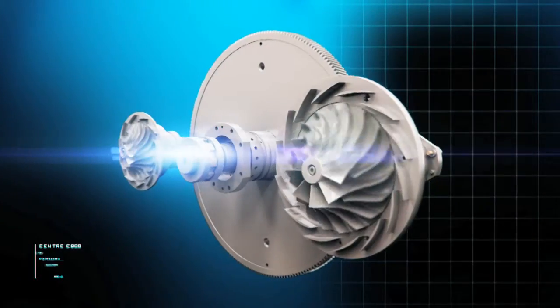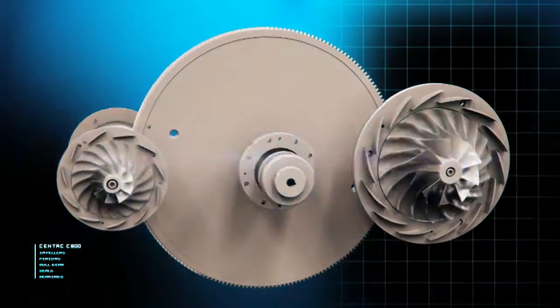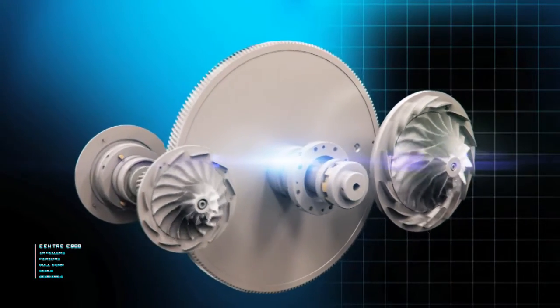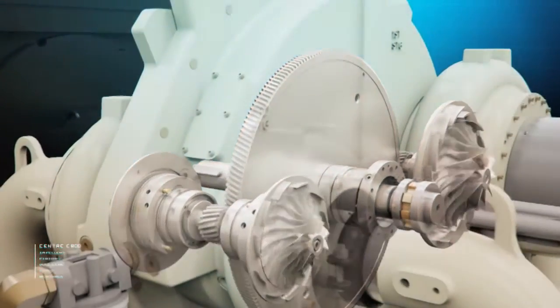At the heart of each C800 centrifugal compressor is the rotating assembly consisting of our signature backward leaning impeller that helps maximize efficiency and turn down, driven by a highly durable bull gear.